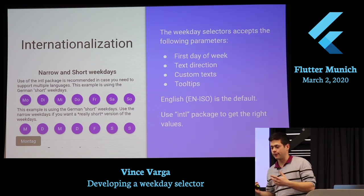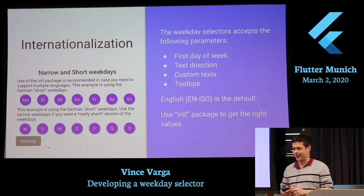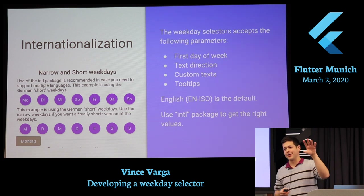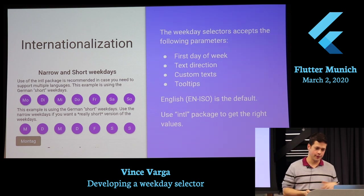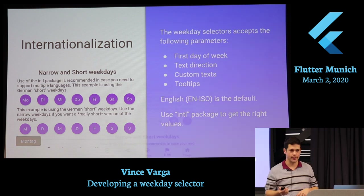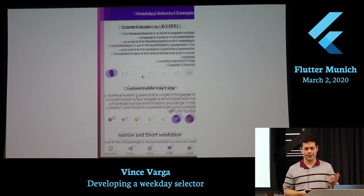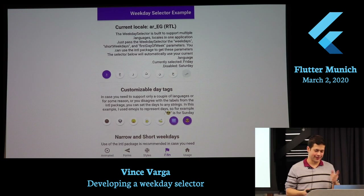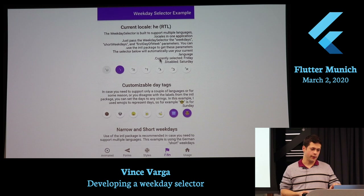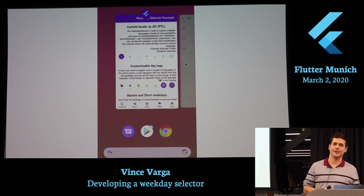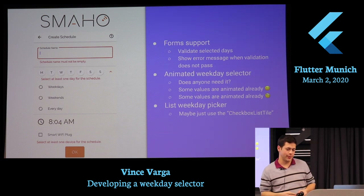One quick note: the first day of the week is different in different countries. In the INTL package they use zero for Monday, but in the DateTime constants one is for Monday. So if you want to use that, you need to add plus one to the firstDayOfWeek property. In this example I'm changing from Hebrew to Arabic — Egyptian Arabic — and in that video you'll see that Thursday is to the right of Friday, so it's the other way around.